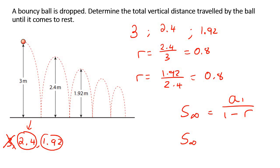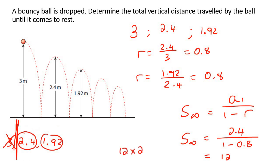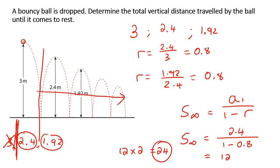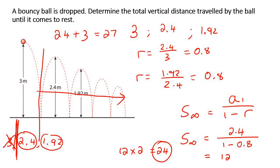Let's use the sum to infinity formula and just start at 2.4. The ratio is still going to be 0.8. That gives you 12. What that means is that if you add all of these numbers together, you get 12. But then we're going to multiply 12 by 2 because all of these numbers go up and down, so it's actually going to be 24. That's 24 meters for all of that. Then we simply add 3 meters — because this one wasn't doubled — and that gives us 27 as our final answer.